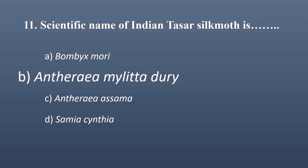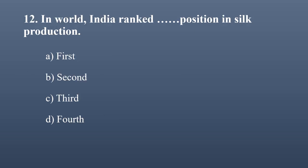India's rank in world silk production? Options: first, second, third, fourth. The correct option is second — India ranks second in world silk production. Most of this silk is mulberry silk. China occupies the first position in silk production.